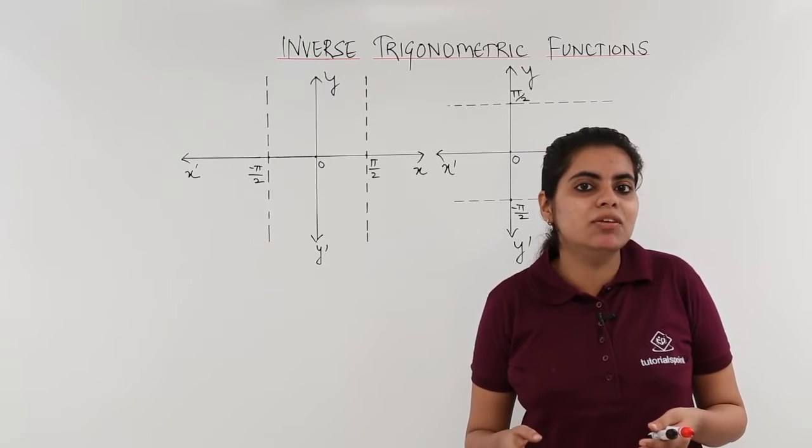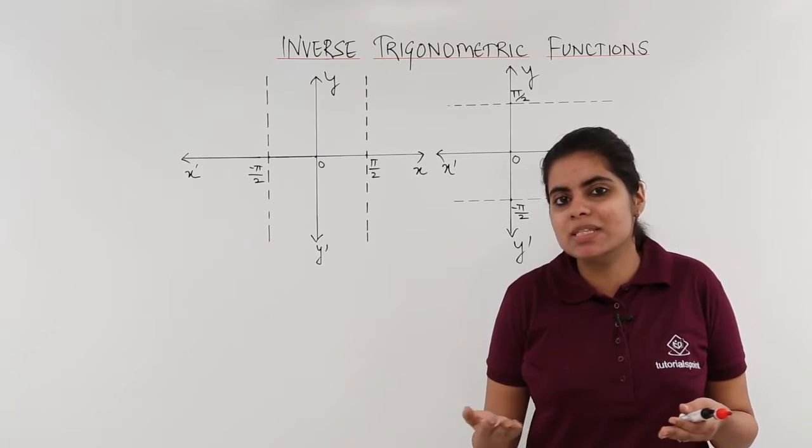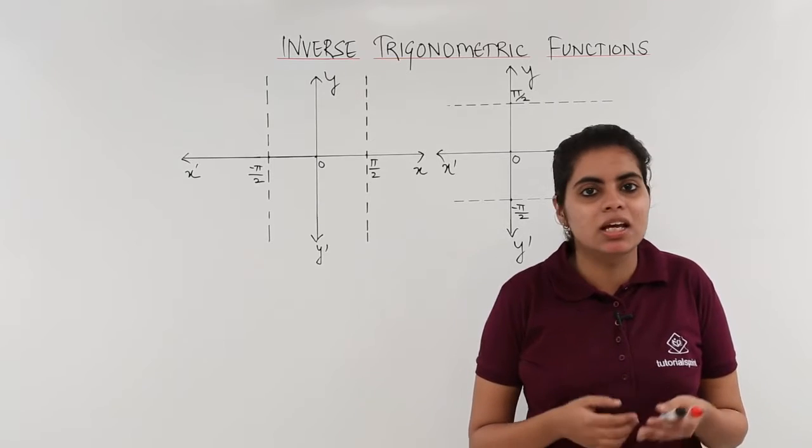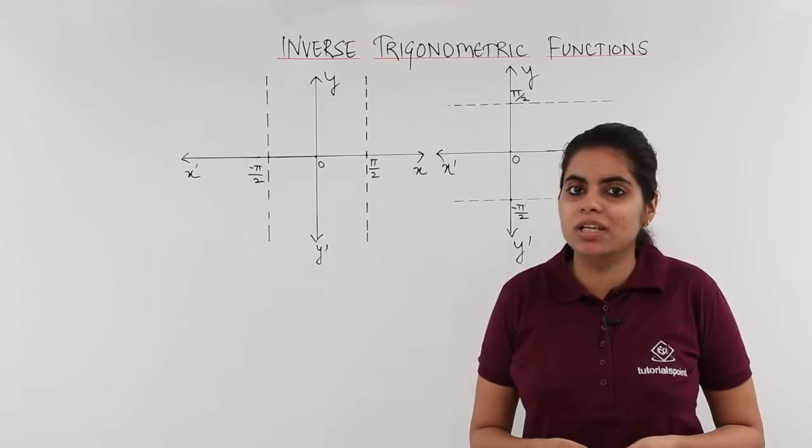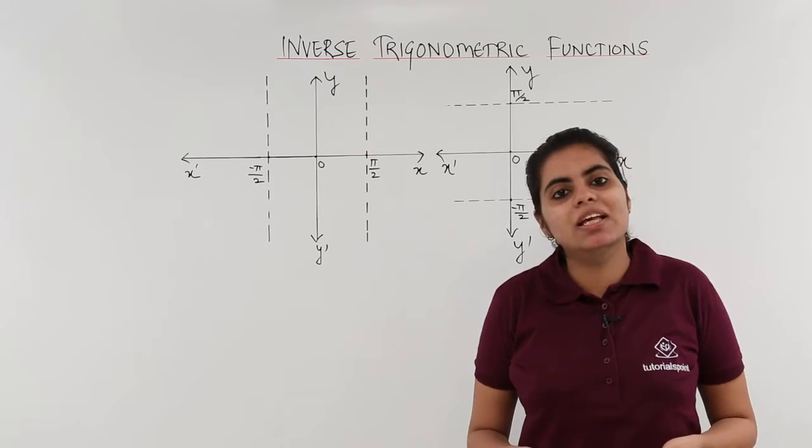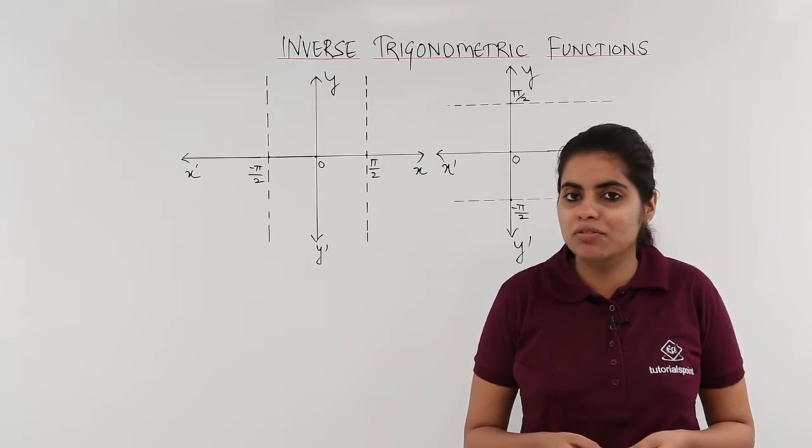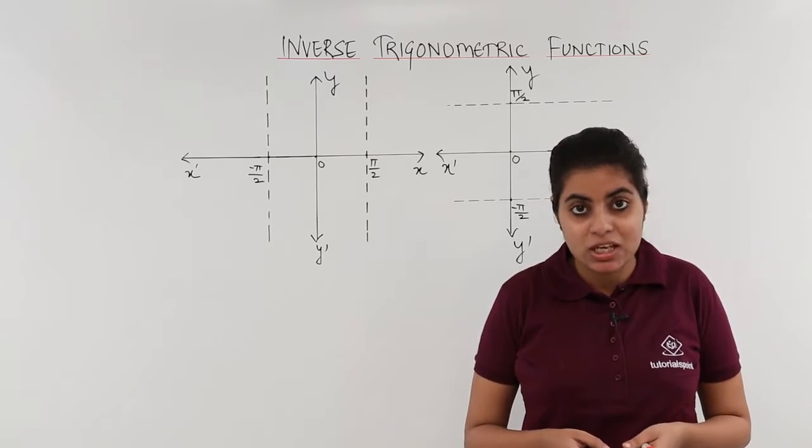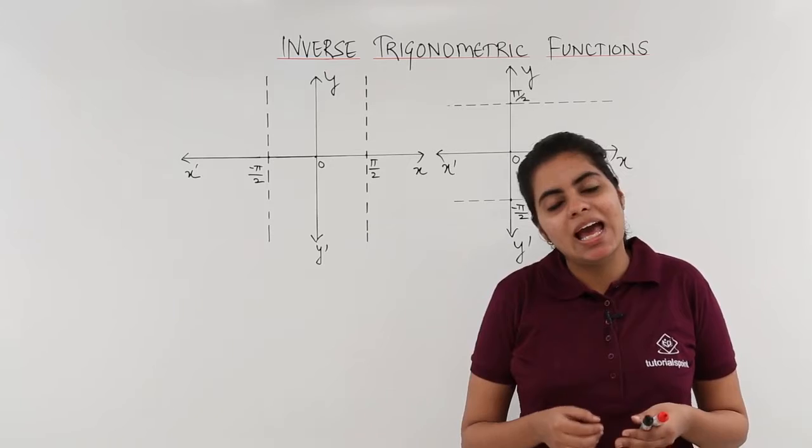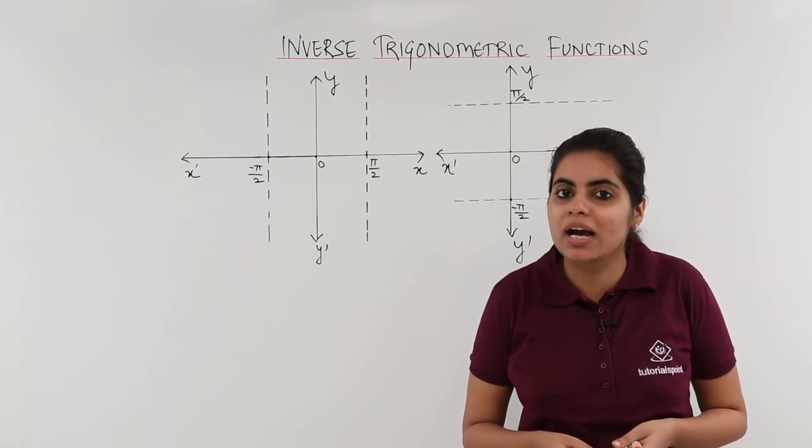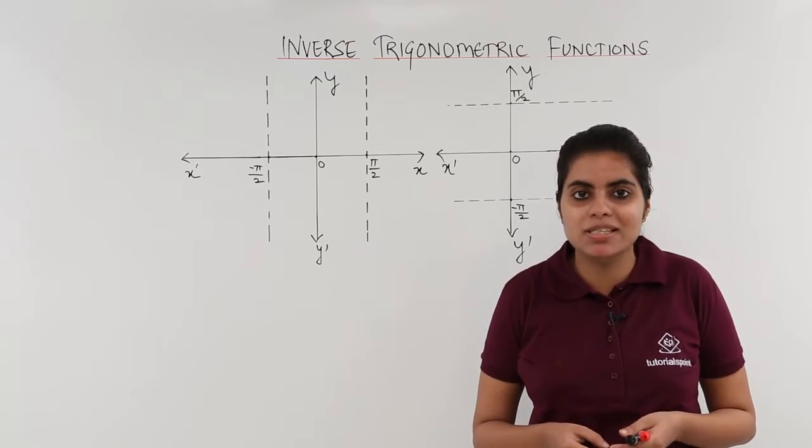So the graph of y equals tan x when we draw it, and then we follow the three steps as we followed earlier - that is interchanging x and y axis and taking the mirror image about the line y equals x - will give me the new graph, and the new graph will be the graph of tan inverse x. So first let's draw the graph of y equals tan x and then we'll draw the graph of y equals tan inverse x.